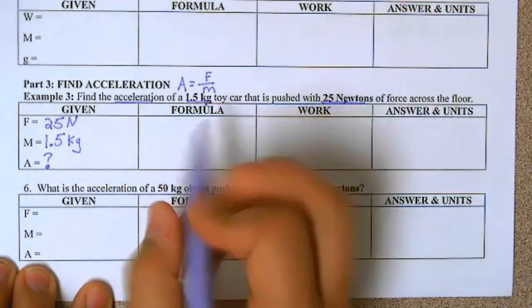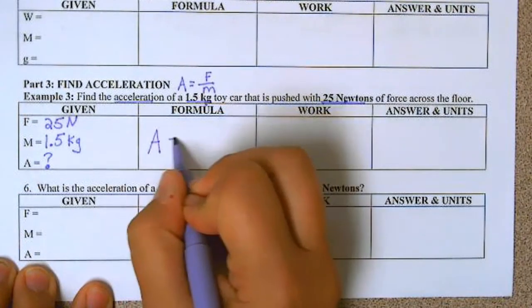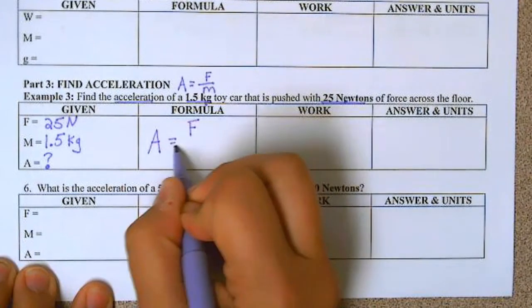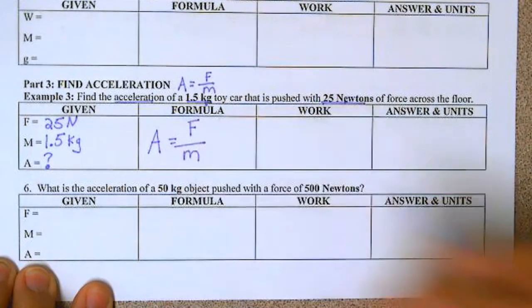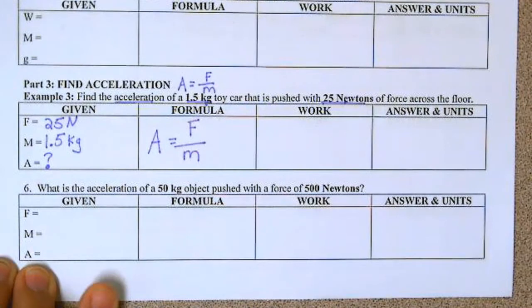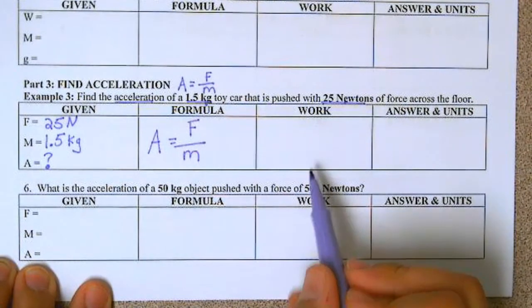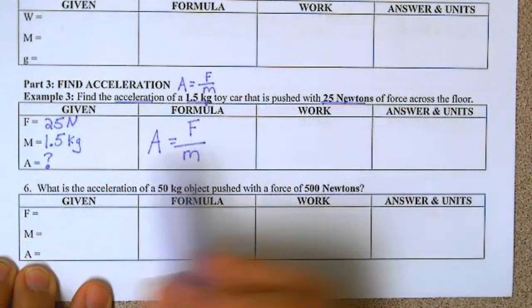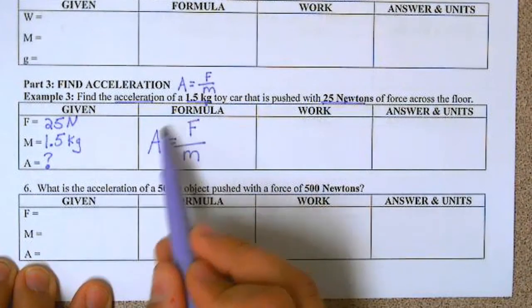So our formula here, A equals F over M. Now we're going to show our work. Take these numbers and plug them into our formula.